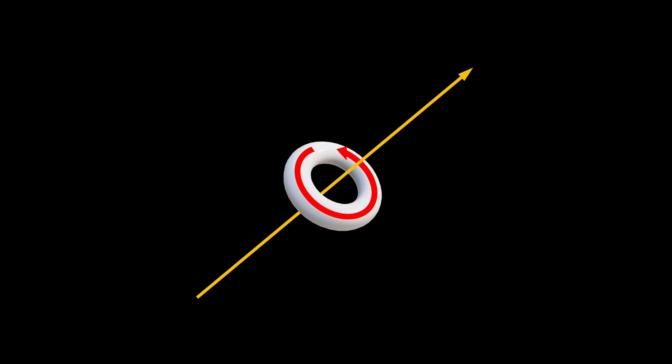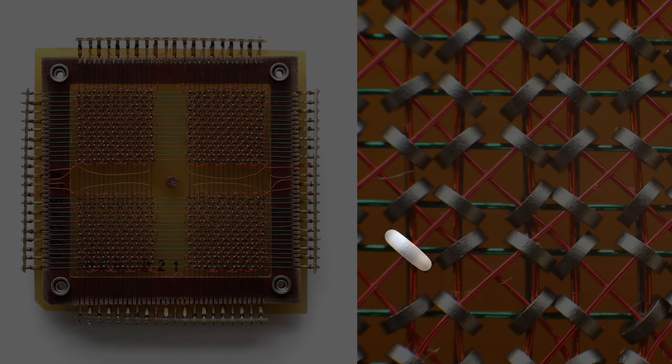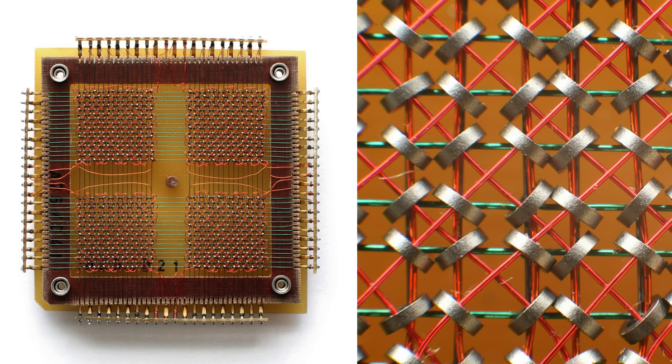When a current passes through a core, it creates a circular magnetic field in it, either clockwise or counterclockwise, depending on the direction of the current. If the current is strong enough, the core retains a permanent magnetization. We can assign one direction to represent a 0 and the other a 1, and voilà, we have a single bit of storage. This is probably my favorite piece of early computing technology, because you can literally see where each bit is being stored.